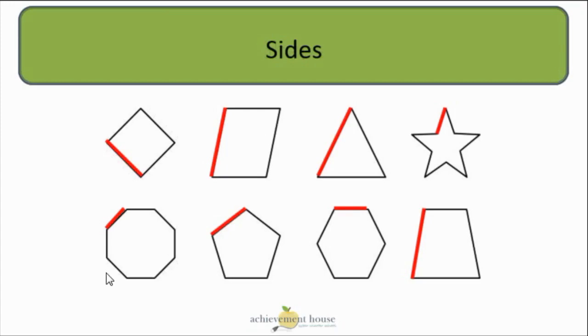Now sides are just the line segments that make up the shapes. So a side of a shape is just a simple line segment. And those sides are all connected. And they bound a certain region inside the shape.